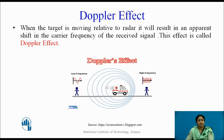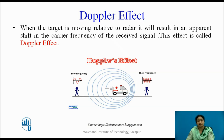As previously discussed, a radar system is classified into two types: the Pulse Radar System and the Continuous Radar System. In a Pulse Radar System, the transmitted signals are in the form of pulses, while in a Continuous Radar System, the signals to be transmitted are in a continuous form. In both cases, they are used to determine the range of the target as well as the velocity of the target.